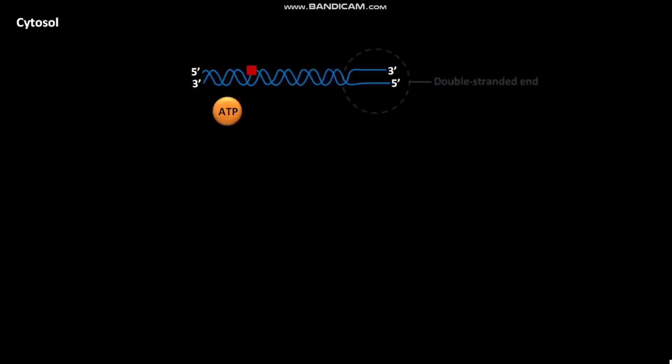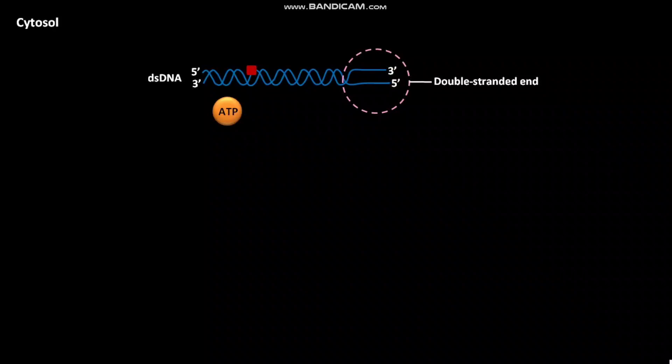This is the double-stranded end of dsDNA present in the cytosol of E. coli. In the cytosol of E. coli, first of all, the enzyme REC-BCD enters at a double-stranded end of dsDNA.